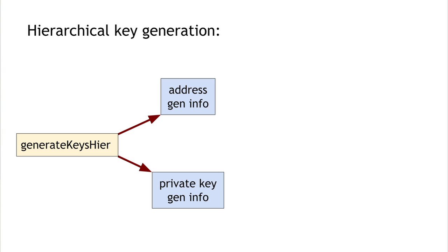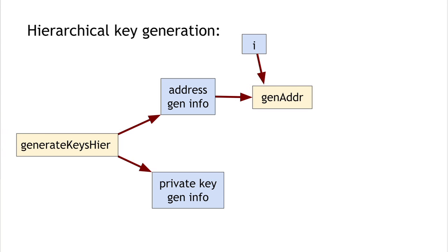With hierarchical key generation, we do things differently. Rather than just doing 'generate keys,' we do a hierarchical key generation operation. This generates 'address generation info' instead of an address, and 'private key generation info' instead of a private key. Given the address generation info, we can apply a 'gen address' operation with any integer i, and that will generate the i-th address in a whole series of addresses.